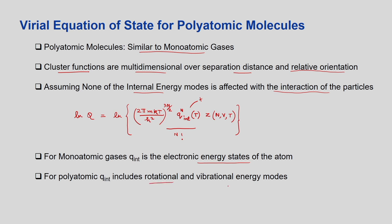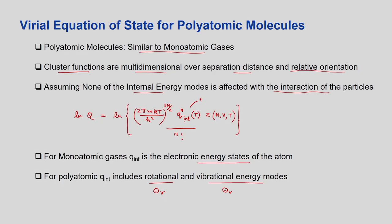For monoatomic gas, q_internal represents only the electronic energy states of the atom. For polyatomic gases, it will also include rotational and vibrational energy modes, which depend on theta_r (rotational temperature) and theta_v (vibrational temperature). These can be obtained from microwave spectroscopy and FTIR infrared spectroscopy respectively. We assume this internal energy mode is unaffected by molecular interactions, so it has a fixed value.